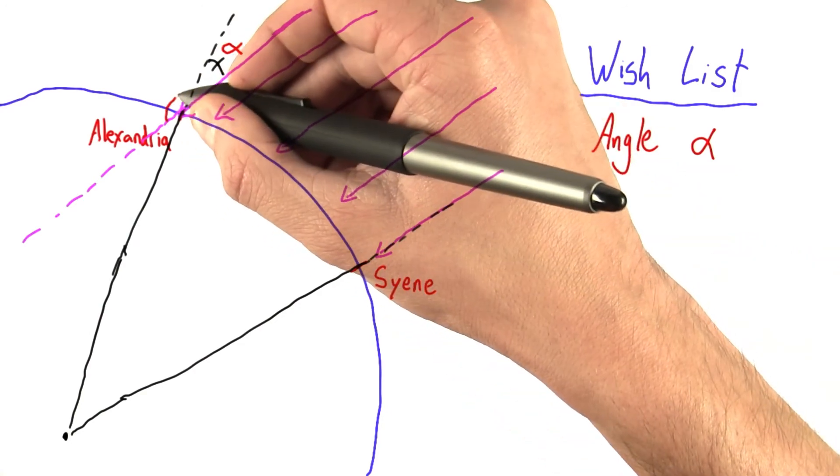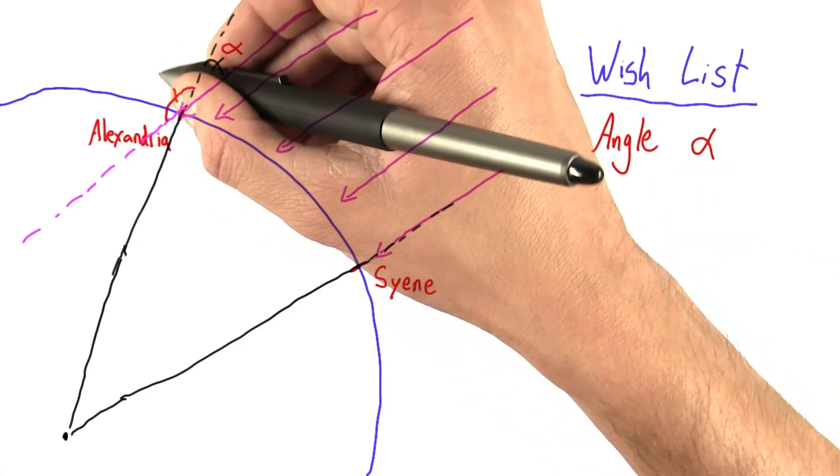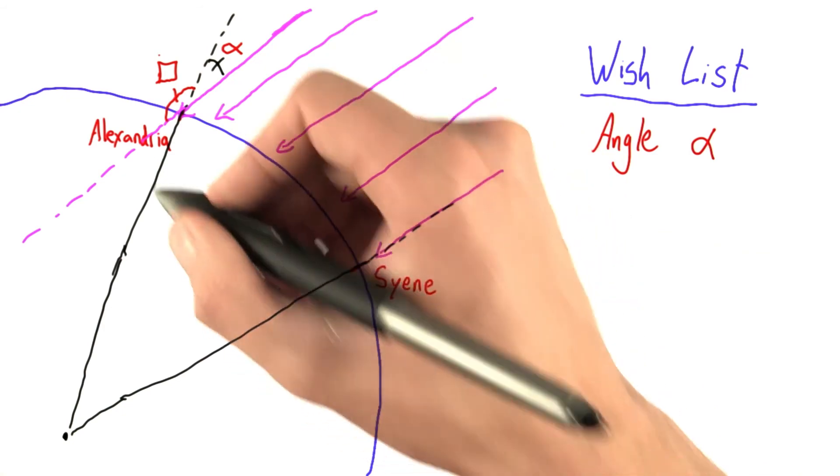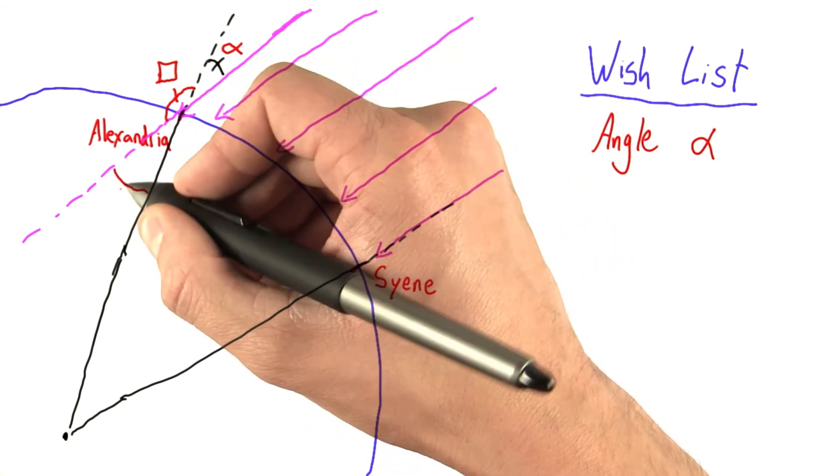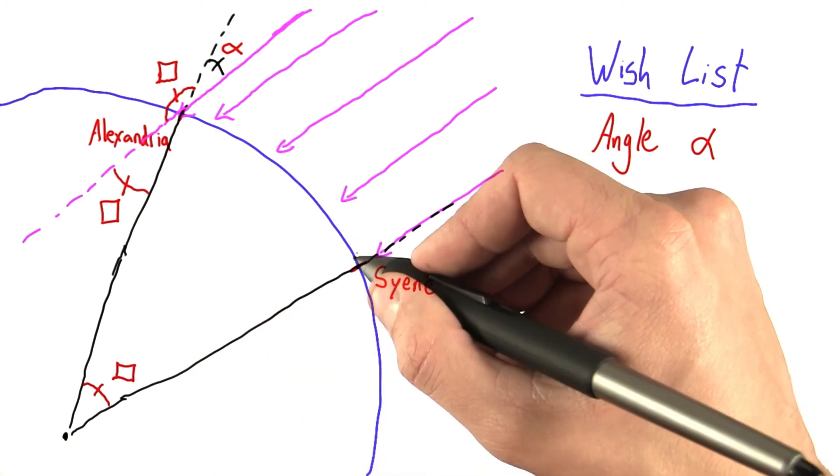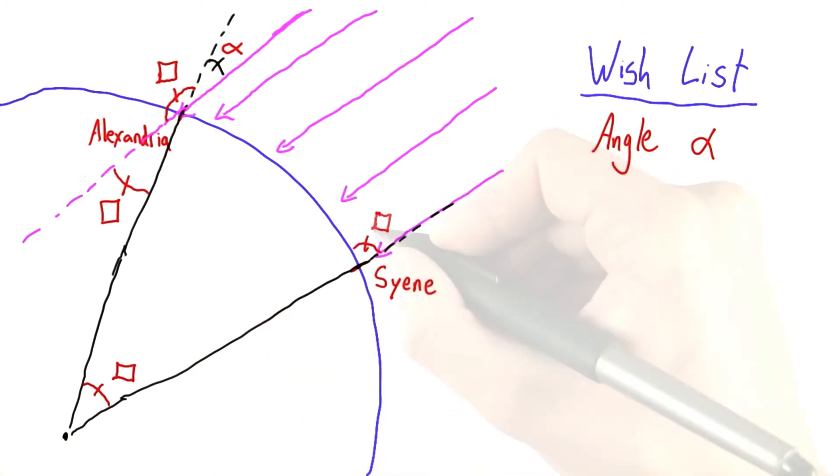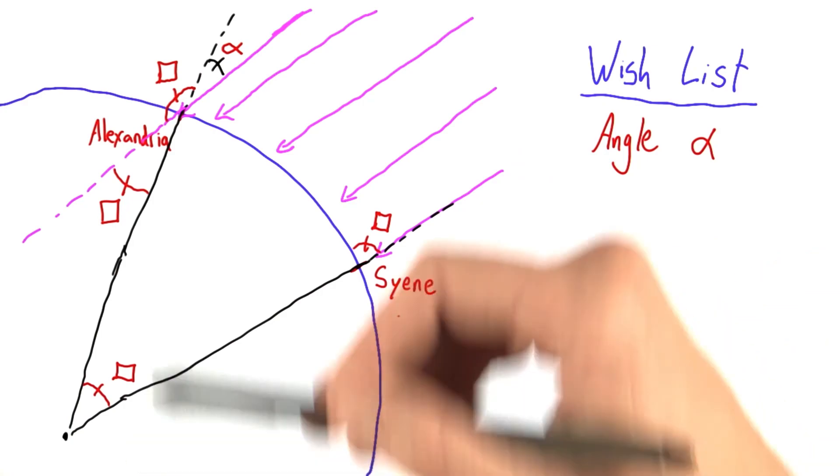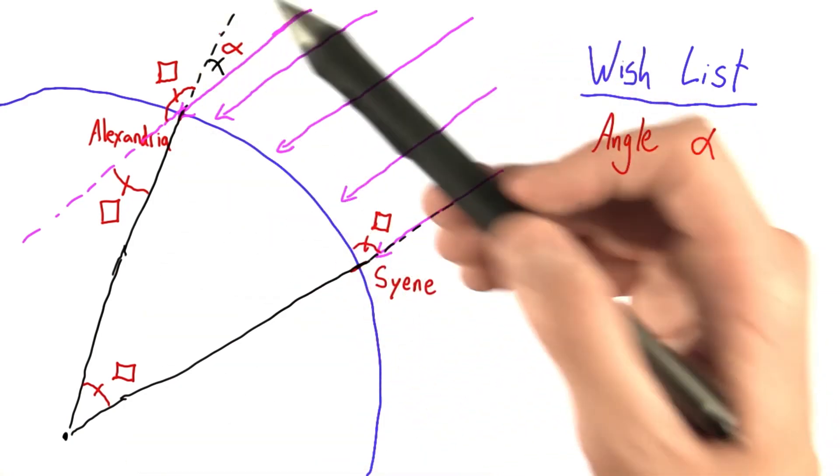What about this angle? Is that equal to alpha? Check that box if you think it is. Or what about this angle? Is that equal to alpha? This one? Or what about this one? So for this quiz, just go ahead and check all of the angles that you think are equal to this one.